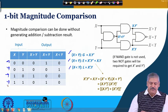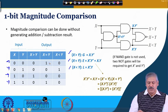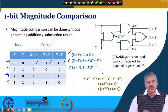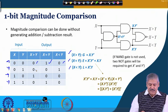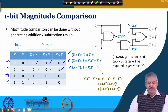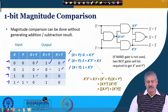When x=0 and y=0, both are 0 so x is equal to y, giving output 1 for equality and 0 for the others. When x=0 and y=1, y is more so x is less than y — that output is 1 and the rest are 0. When x=1 and y=0, x greater than y is 1. And when both are 1, they are equal again, so the other two are 0.